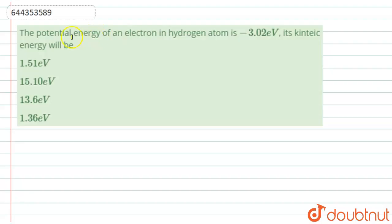Hello students, here the question is given: the potential energy of an electron in hydrogen atom is minus 3.02 electron volt. Its kinetic energy will be? First option is 1.51 electron volt, second option is 15.10 electron volt, third option is 13.6 electron volt, and fourth option is 1.36 electron volt.